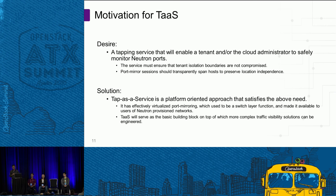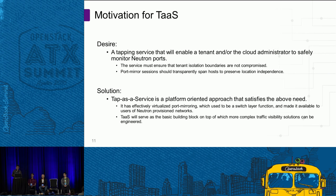What one would desire is a tapping service that allows the tenant and/or cloud administrator to safely monitor Neutron ports, ensuring tenant isolation boundaries are not broken. Because virtual networks span multiple hosts, port mirror sessions also need to span multiple hosts — remote port mirroring is of very high importance. TAP as a Service is the platform-oriented solution we have proposed and implemented. It has virtualized port mirroring, which used to be a switch-level function, and brought this facility into the hands of a tenant. TAS will serve as a basic building block on top of which more complex traffic visibility solutions can be engineered.